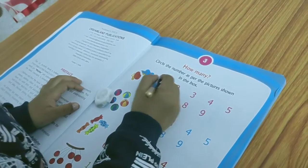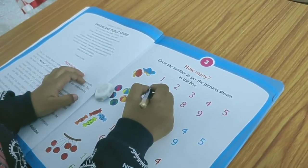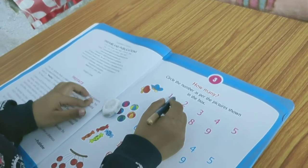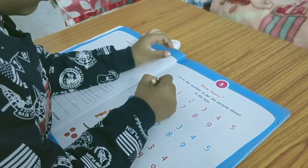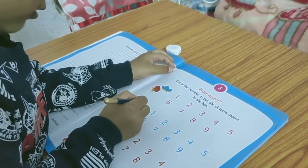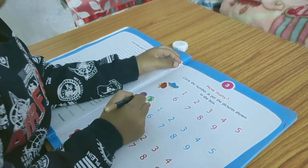What do you say? Circle the number as per the pictures shown in the box. One, two, yes. One, two, three, four, five, yes.